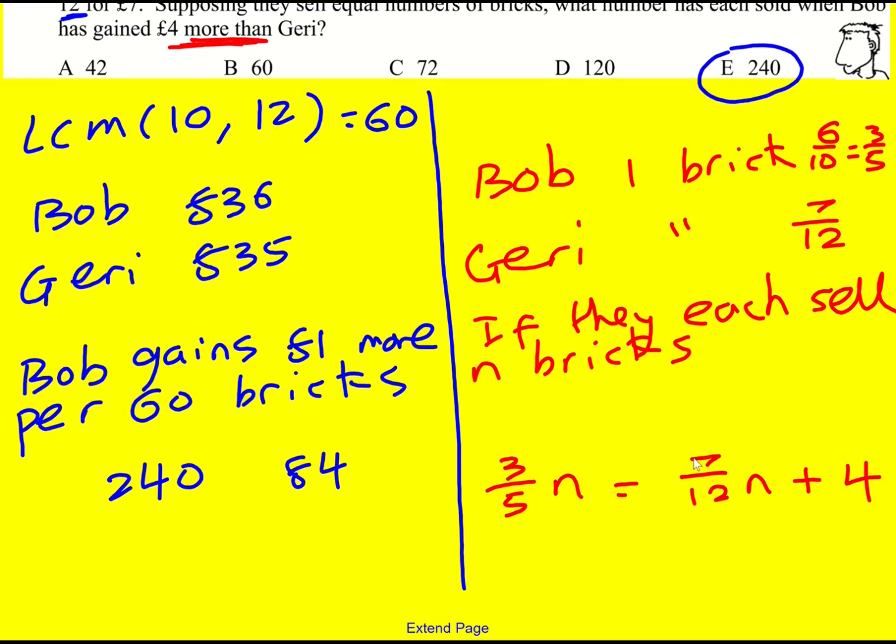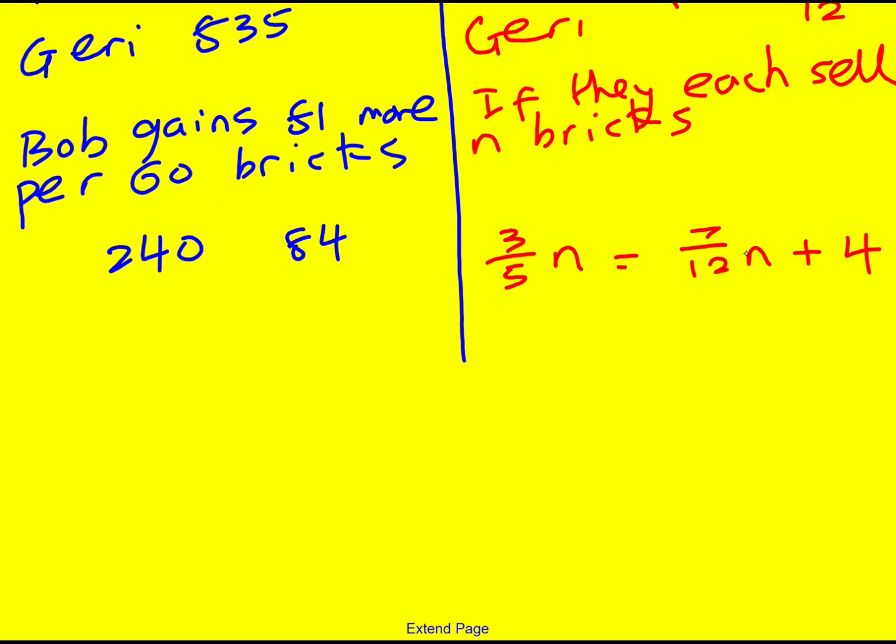So a fractional equation. I'm now going to times through by the lowest common multiple of 5 and 12, which is actually 60. So I'm going to times through by 60. This is why this is a harder route, because you have to have some knowledge of fractional equations. Okay, when I times through by 60 here, 3/5, I'm going to times by 60 equals 7/12 times 60, and then I times the 4 by 60 as well to give 240.